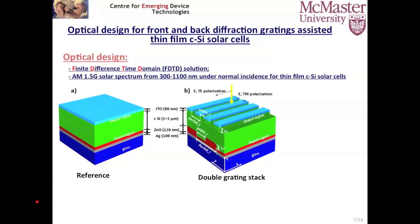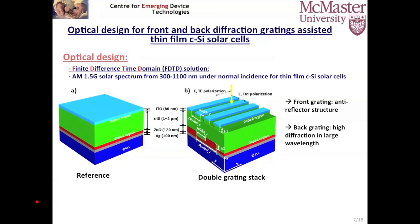My design is based on the FDTD approach, and the AM1.5 global solar spectrum from 300 to 1100 nanometers under normal incident light is considered for the thin film crystalline silicon solar cell. The stack is composed from back side to front side: on the glass substrate there is a thin layer of silver acting as the back contact, then a carrier collector of zinc oxide, then the p-n junction of crystalline silicon layer. On the front side is a very thin ITO layer acting as anti-reflection coating and the front carrier collector. We pattern the front and back gratings with different lattice parameters.